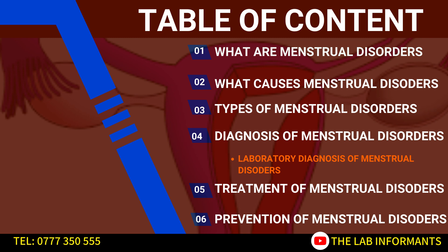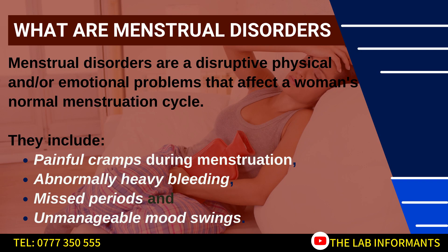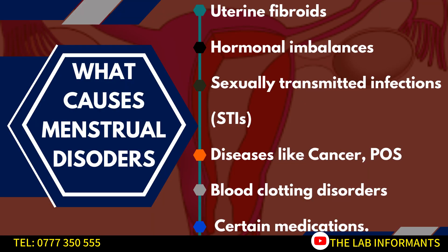We'll also discuss treatment and prevention of menstrual disorders. By definition, menstrual disorders refers to a group of disruptive physical or emotional problems that can affect a woman's normal menstrual cycle or periods. Some of these problems may include painful cramps during menstruation, abnormally heavy bleeding, missed periods, or unmanaged mood swings.